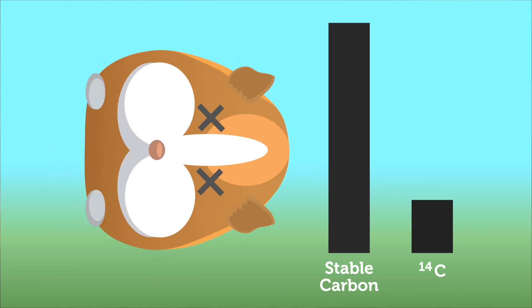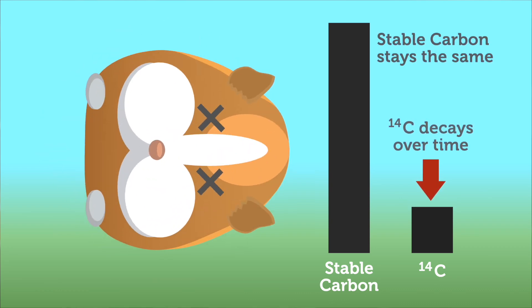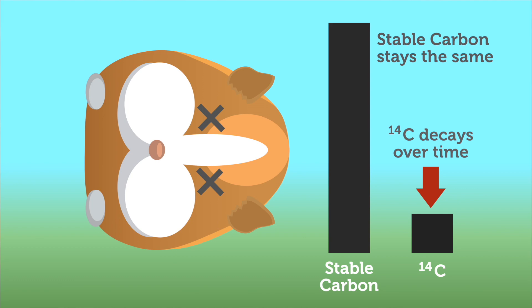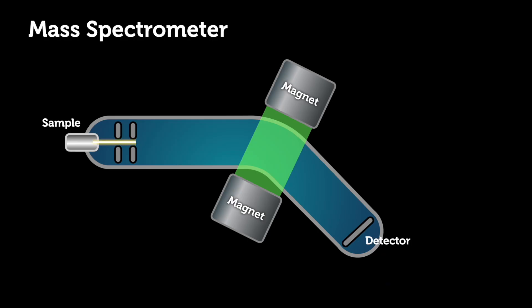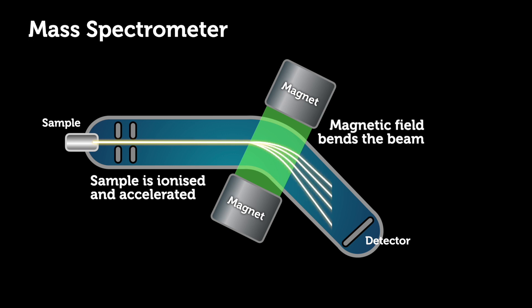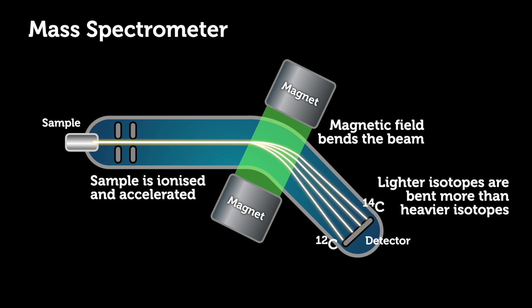When an organism dies, it stops taking in new carbon atoms and the number of carbon-14 atoms in its body starts to decrease as the isotope decays. By using a mass spectrometer, we can count the number of different carbon isotopes in a sample. A mass spectrometer is a machine that counts relative atomic mass, meaning it calculates the proportion of different isotopes in a sample. The amount by which the ratio of carbon-12 to carbon-14 differs from that in the atmosphere tells us how long the carbon-14 atoms have been decaying, and hence how long ago an organism died.